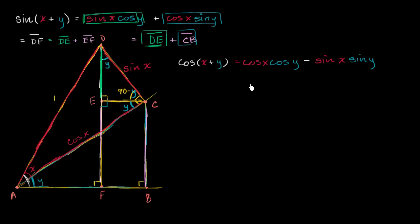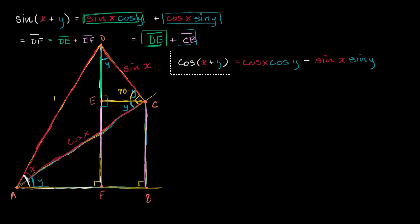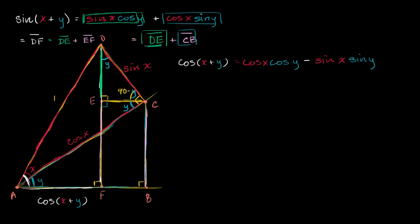Just like we thought about it for sine, what is cosine of x plus y in this diagram? Well, x plus y is this angle right over here. Looking at right triangle ADF, cosine of x plus y is adjacent over hypotenuse, which is segment AF over the hypotenuse. Since the hypotenuse is just 1, AF divided by 1 is just AF. So cosine of x plus y is simply the length of segment AF.